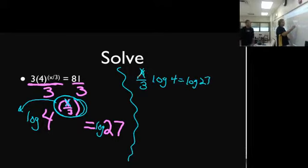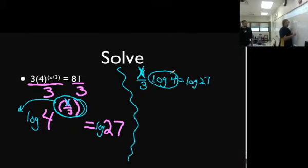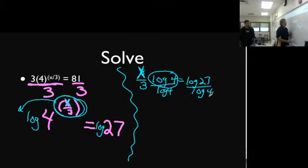Now, this whole parenthesis gets moved out front. So we have (x/3) times the log of 4 equals the log of 27. I want to get x by itself. So I want everything else to be moved away from x. Why don't we move this ugly thing first? Divide by log 4.